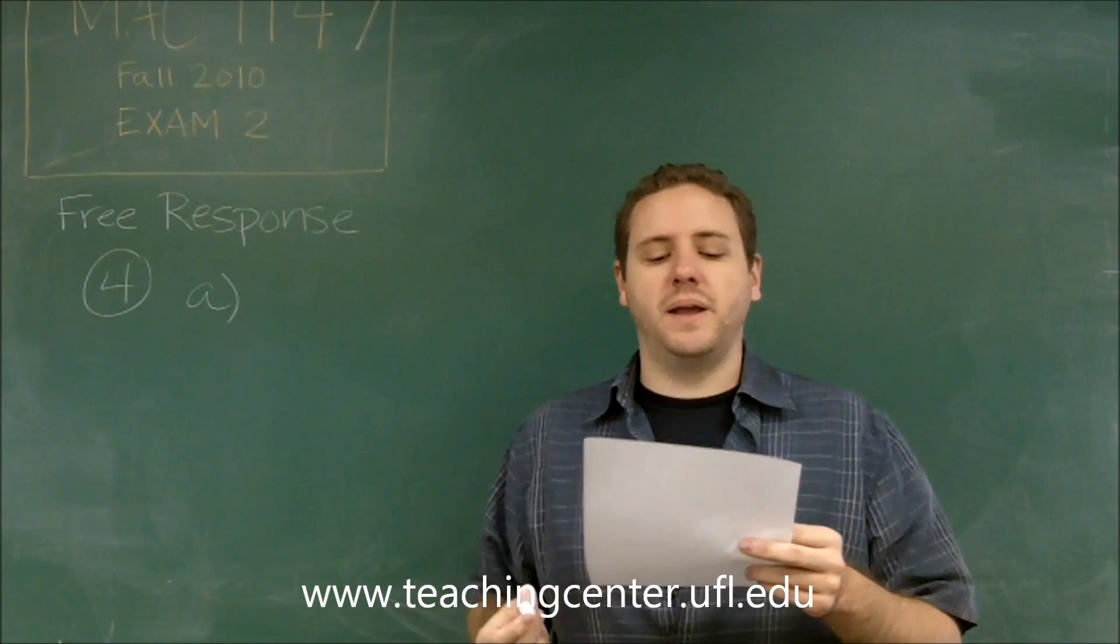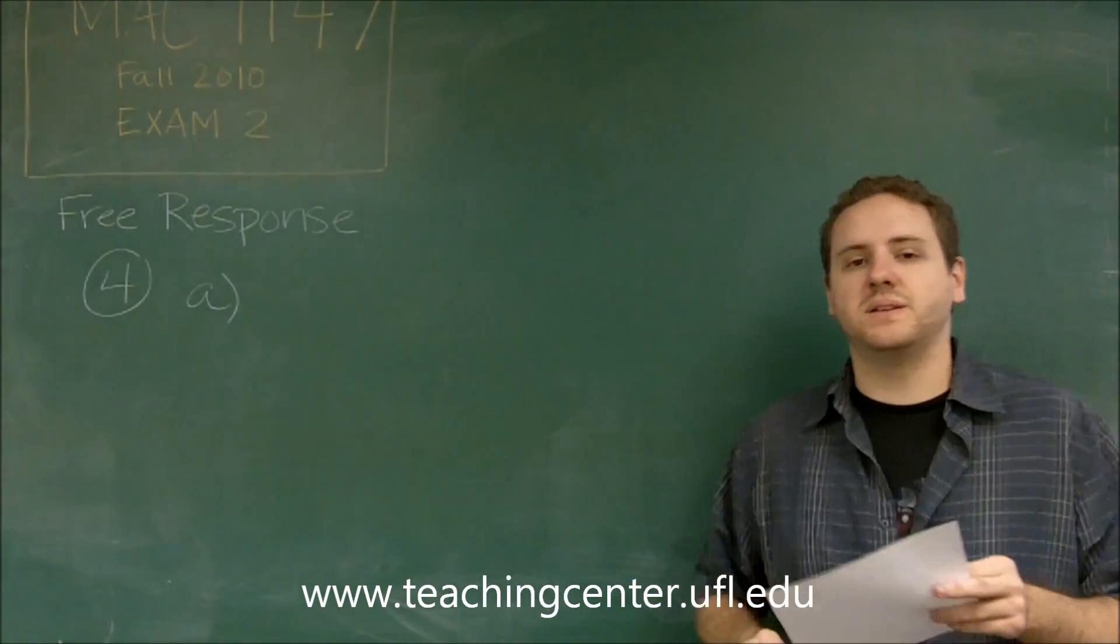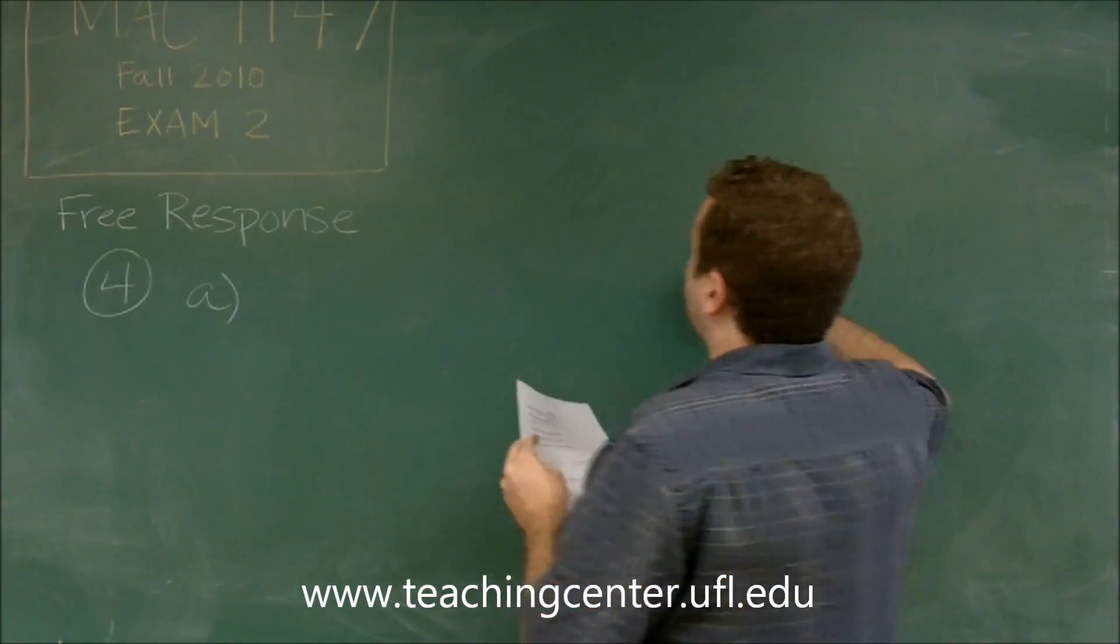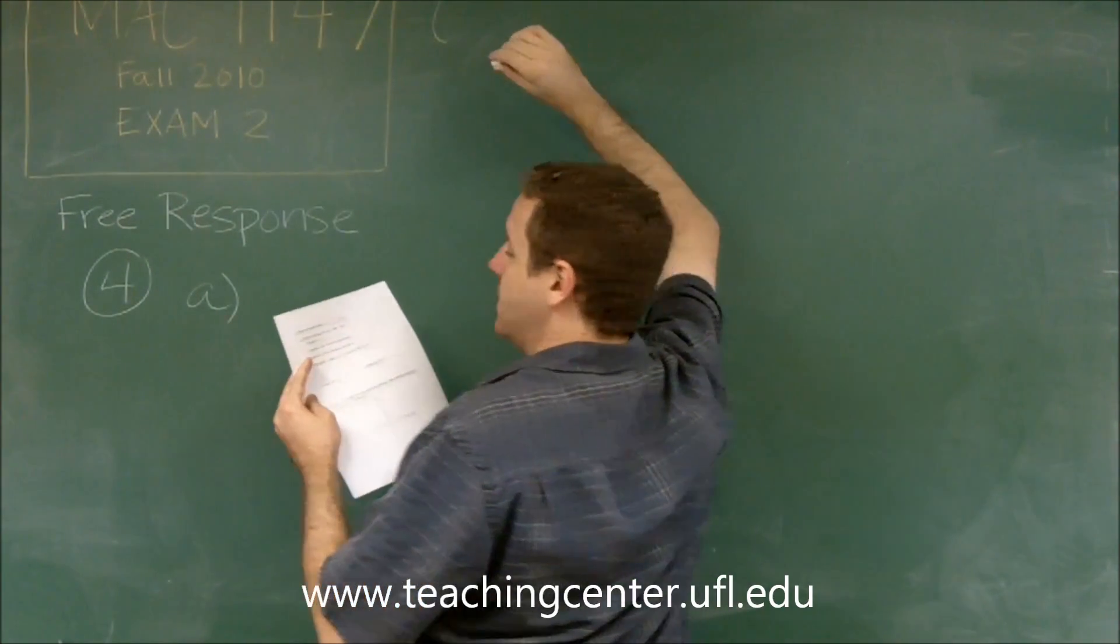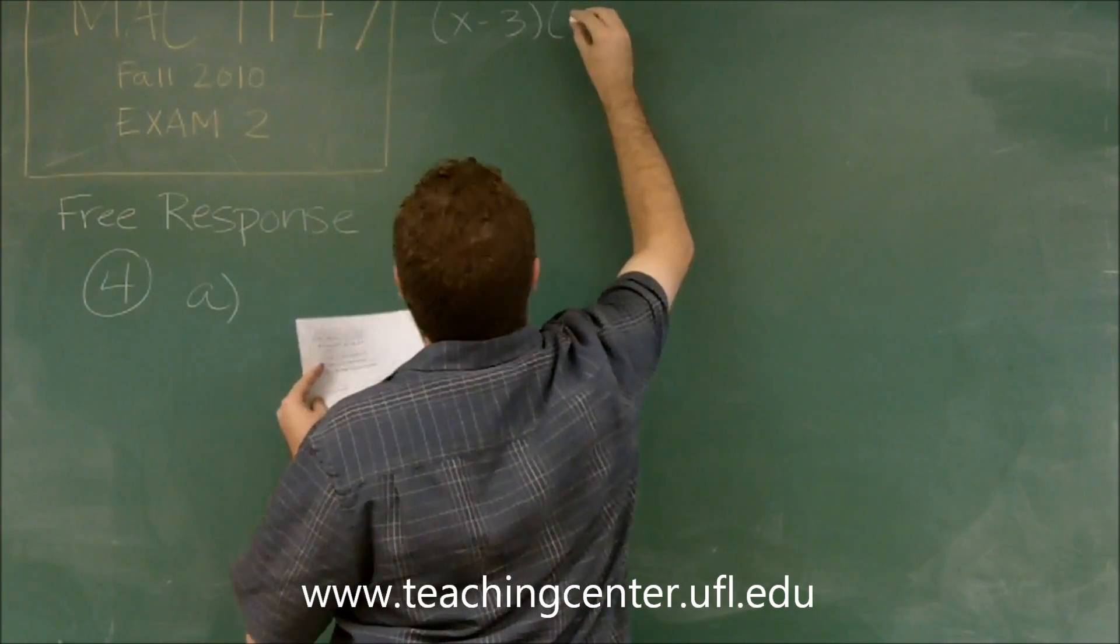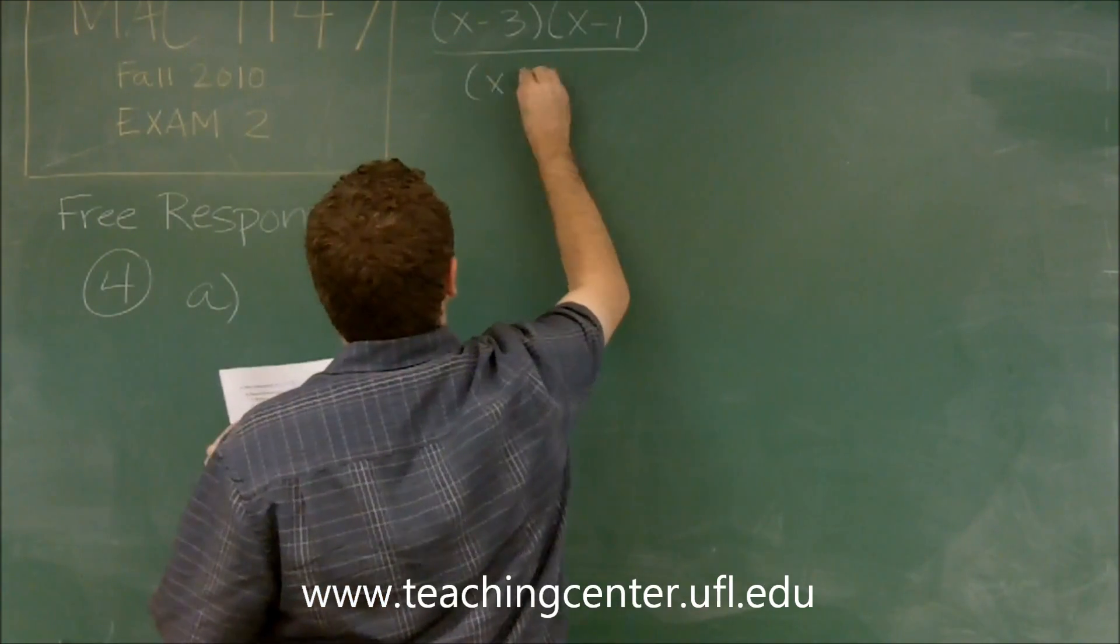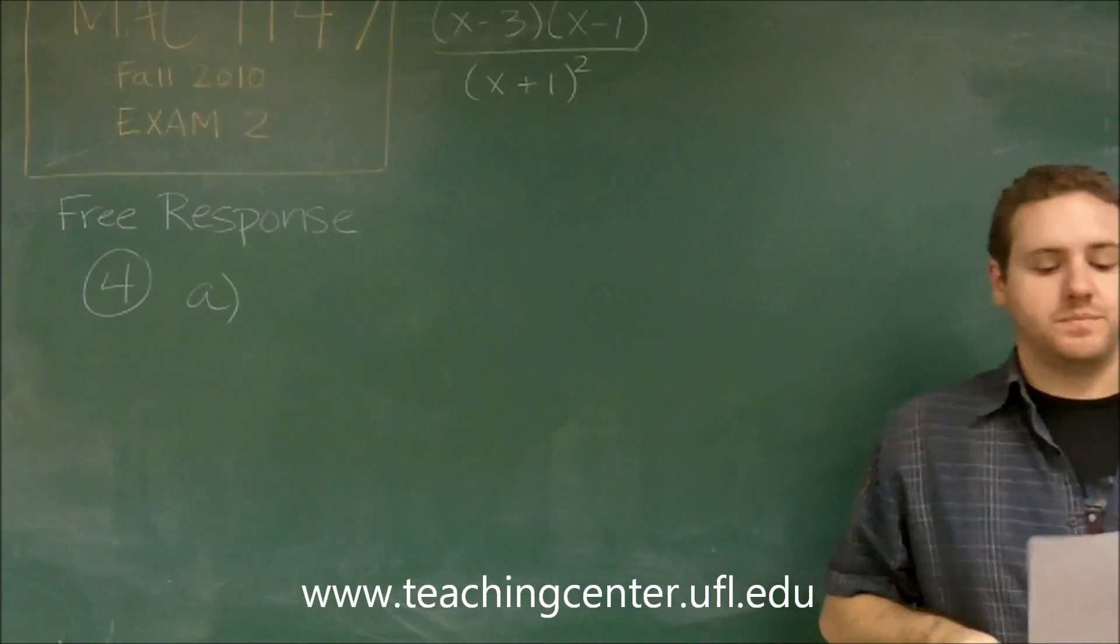First of all, the domain of F. Before we start figuring out all of these, let's write the function in a more simplified format. So let's factor the top and the bottom. The top, x squared minus 4x plus 3, factors into x minus 3, x minus 1. And the bottom, x squared plus 2x plus 1, factors into x plus 1 squared.